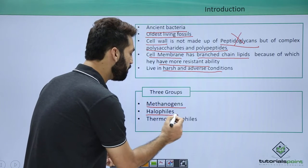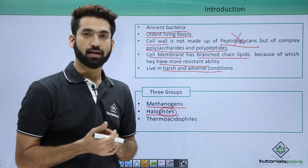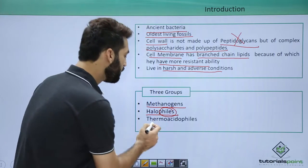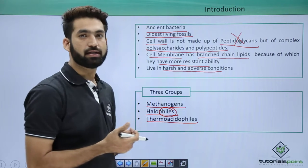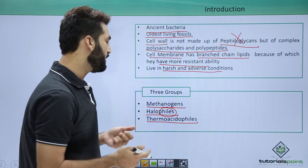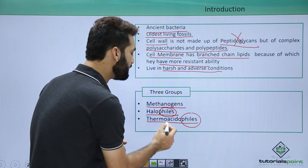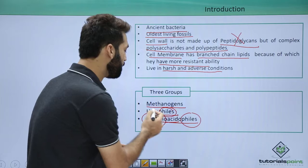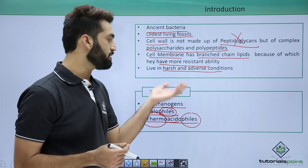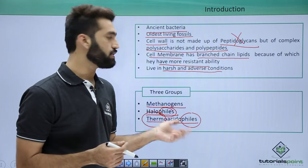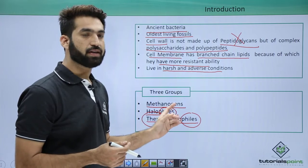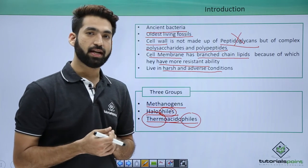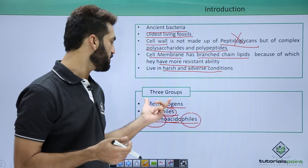Next are halophiles — 'phile' means loving and 'halo' means saline — so Archaebacteria can also live in conditions of extreme high salinity. Thermoacidophiles are the third class of Archaebacteria; they thrive in highly acidic conditions where pH may go as low as two, and at very high temperatures. Thus there are three groups of Archaebacteria: methanogens, halophiles, and thermoacidophiles. In the next session we'll detail methanogens.